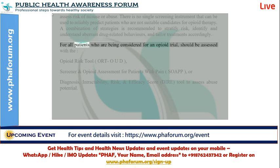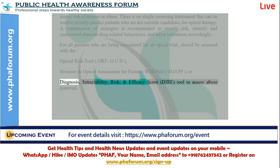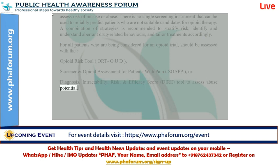For all patients being considered for an opioid trial, they should be assessed with the opioid risk tool, ORT; the AUDIT-OUD; the screener and opioid assessment for patients with pain, SOAPP; or the diagnosis, intractability, risk, and efficacy score, DIRE tool to assess abuse potential.